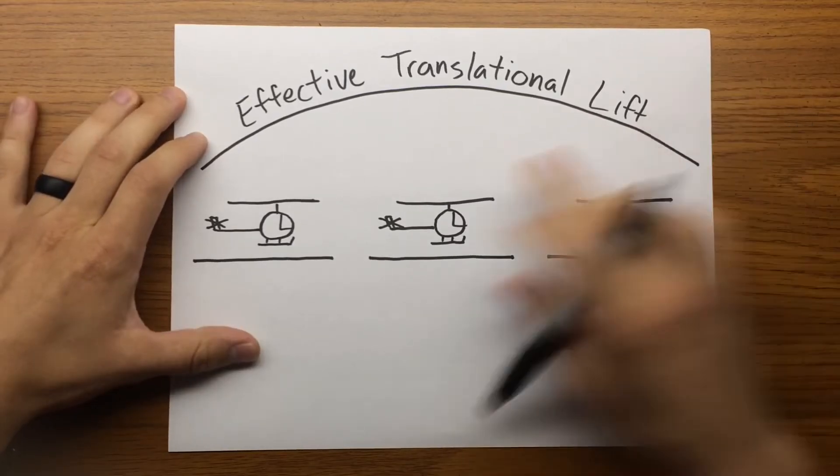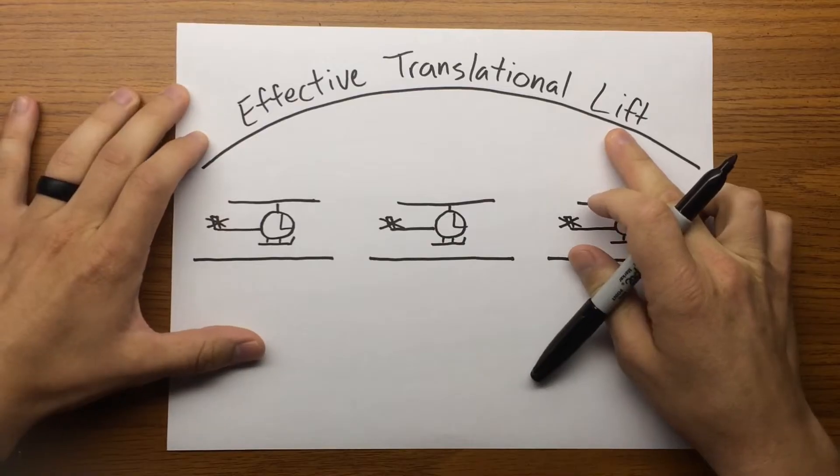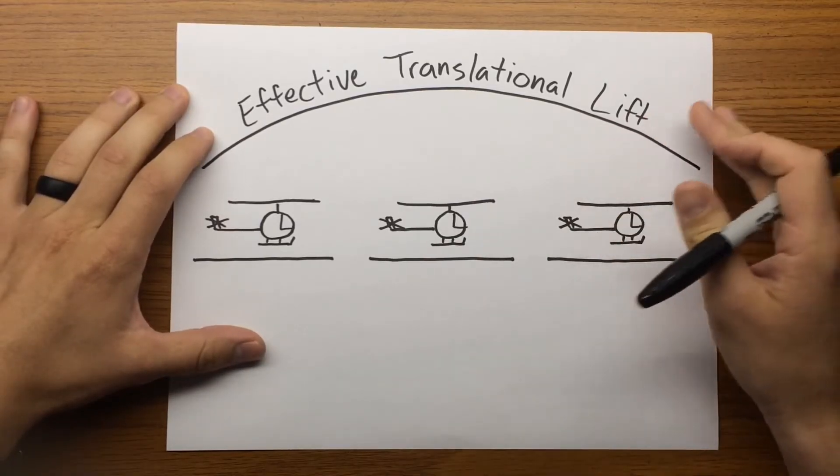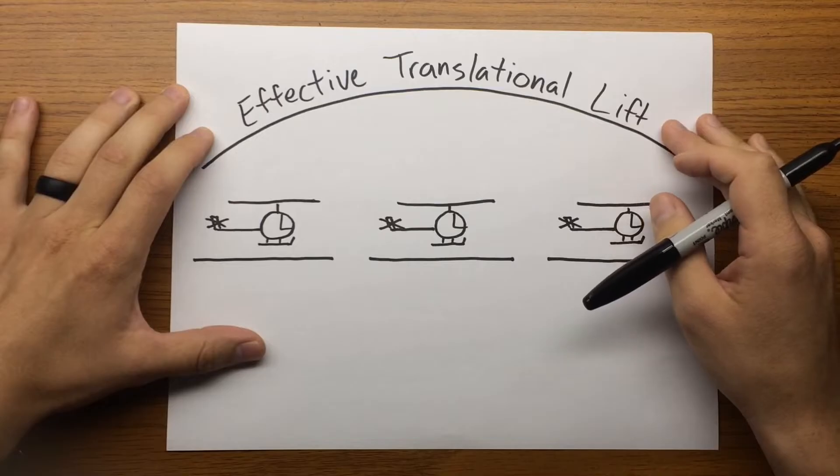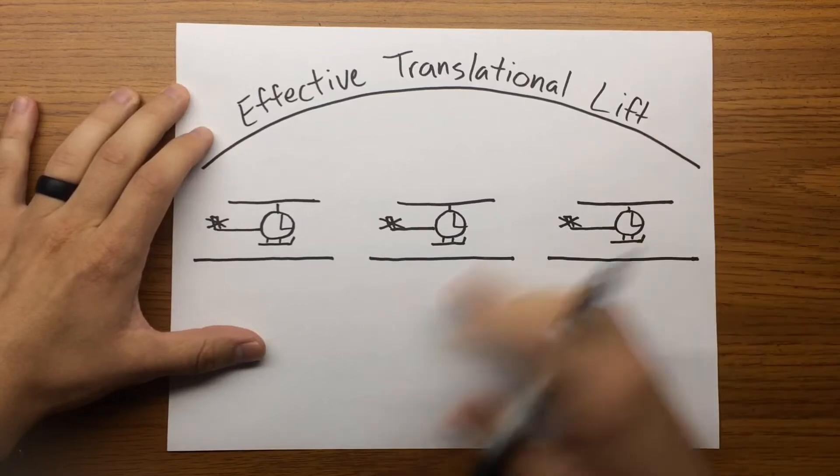Effective translational lift, what is it? Well, it is when the main rotor system completely outruns the recirculation of old vortices and begins to work in a relatively clean and undisturbed air environment, thus becoming more efficient.